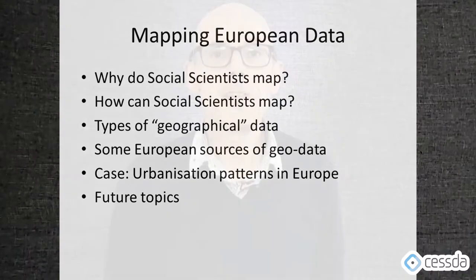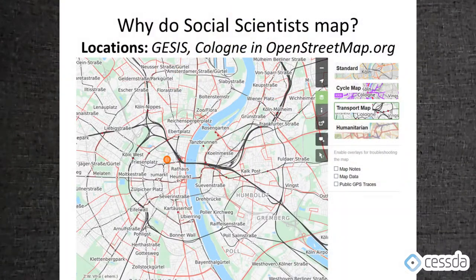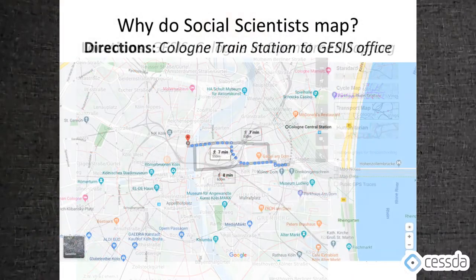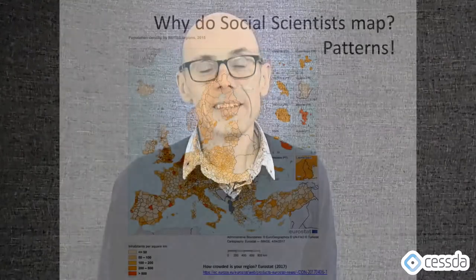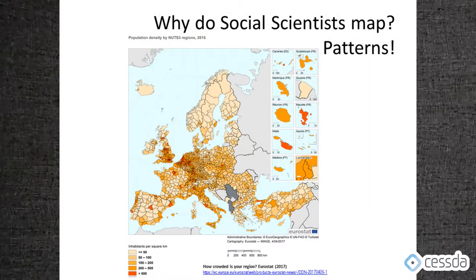Starting with why we may be interested in mapping data: first of all, we usually want to know where we are located, and secondly we want to know where we're going or where we're coming from. We have all used open tools like OpenStreetMap or Google Maps to understand where we are in a city or how to go from A to B. However, as social scientists we're interested not only in locations but in patterns.